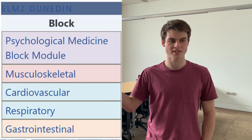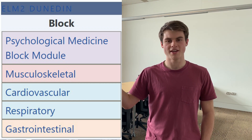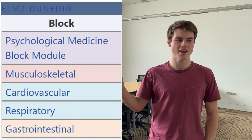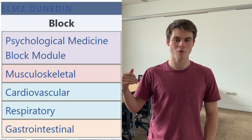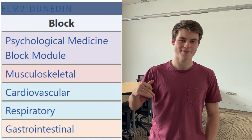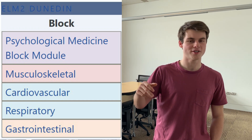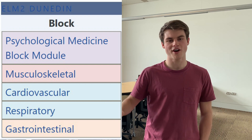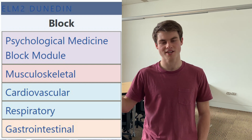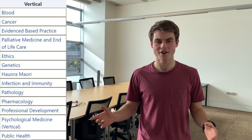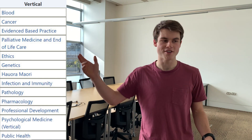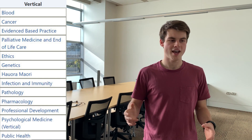In ELM 2 we started with that outlier, psych med, then around the start of April we moved on to musculoskeletal, then around the end of May we moved on to cardiovascular. Now we're on respiratory, and then we'll move on to GI soon — that will be five block modules to cover the year.